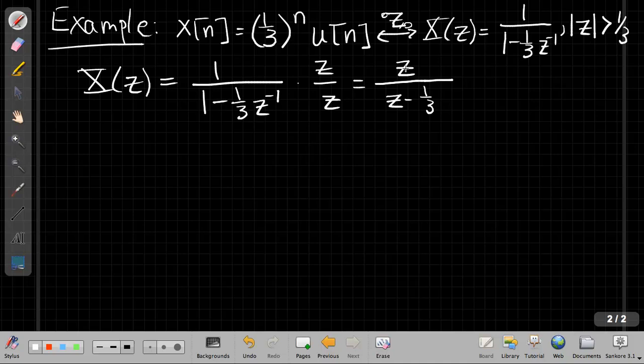If I multiply this through, I get one times Z is Z, and 1 - (1/3)z^(-1) gives me Z - 1/3. Let me redraw the denominator in red. We'll use color coding, we'll put the zeros in green.